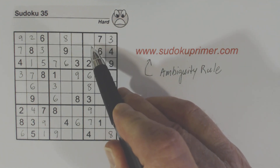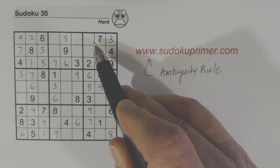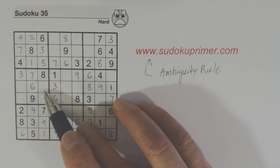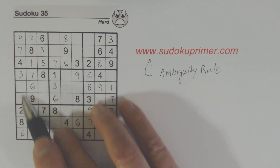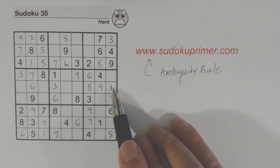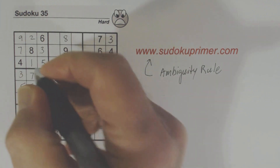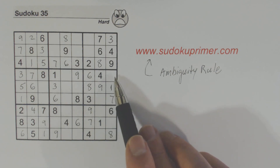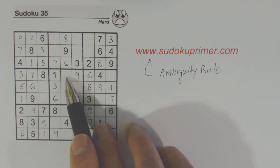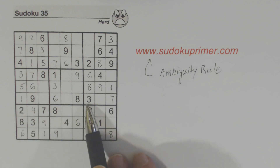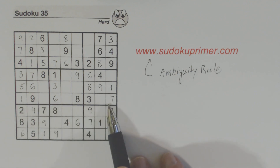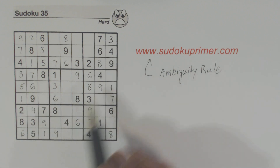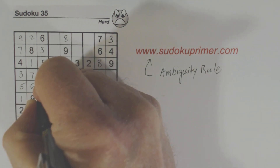Now let's look at this column where we're only missing two numbers: 1 and 5. That makes these 1, 5 twins and 2, 4 twins. We've filled in this 1 so we can fill in those two numbers. Now in this row we're missing 2, 4, and 5. We have 2, 5 twins there and 2, 5 twins there — so that has to be a 4, because we have 2, 5 twins and there's a 4 there and a 4 there. So that's a 2 because of that.